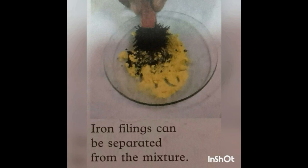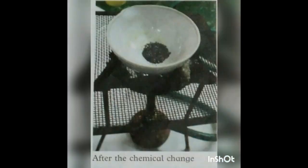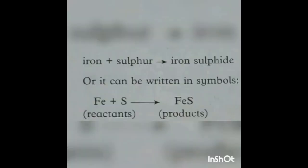When we heat the yellow sulfur powder with iron filings, the yellow sulfur powder changes to a black solid form. This black solid is called iron sulfide. When iron and sulfur are heated together they combine — this is the compound iron sulfide. The equation: Fe (iron) + S (sulfur) → FeS (iron sulfide). Fe and S are the two reactants that form the product iron sulfide.